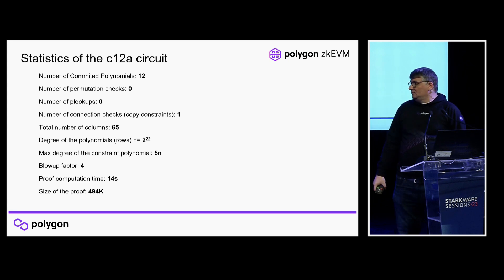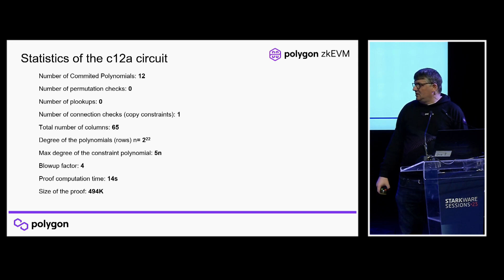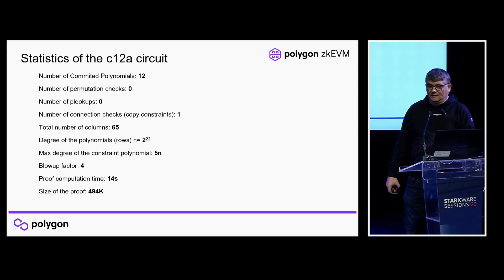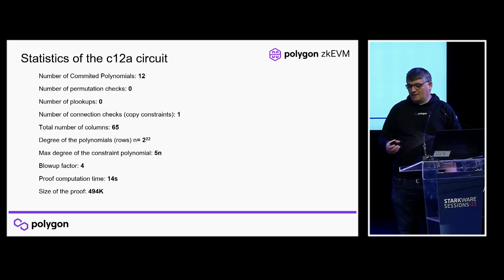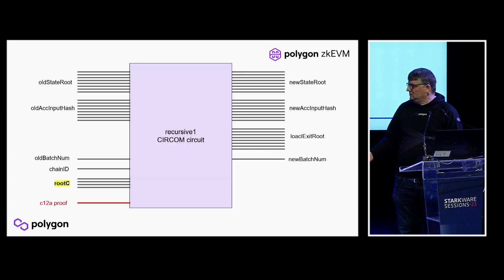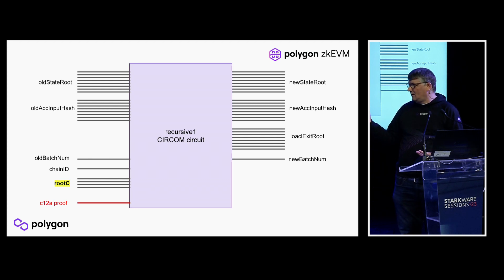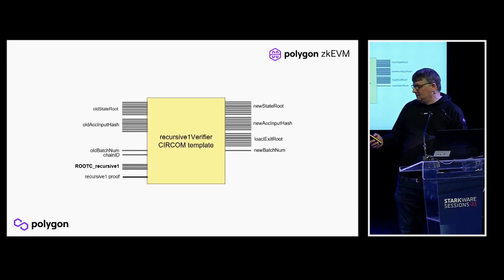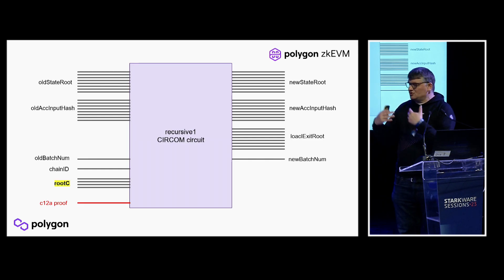After this, we reduce significantly — going from 2 megabytes down to about half a megabyte. The proving time drops from 2 minutes to 14 seconds. We use a blowup factor of 4, giving a much simpler circuit. Then the next step is another reduction and normalization — a circuit that does exactly the same thing, but we add an extra public input called Root C. In this circuit it does nothing yet — it's just placed there as a public input.